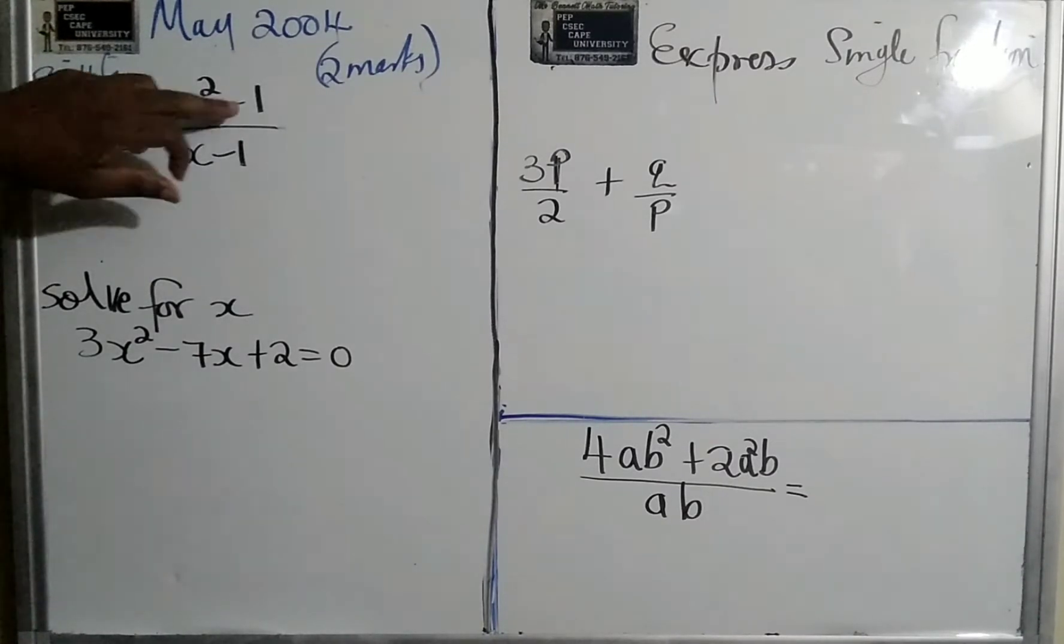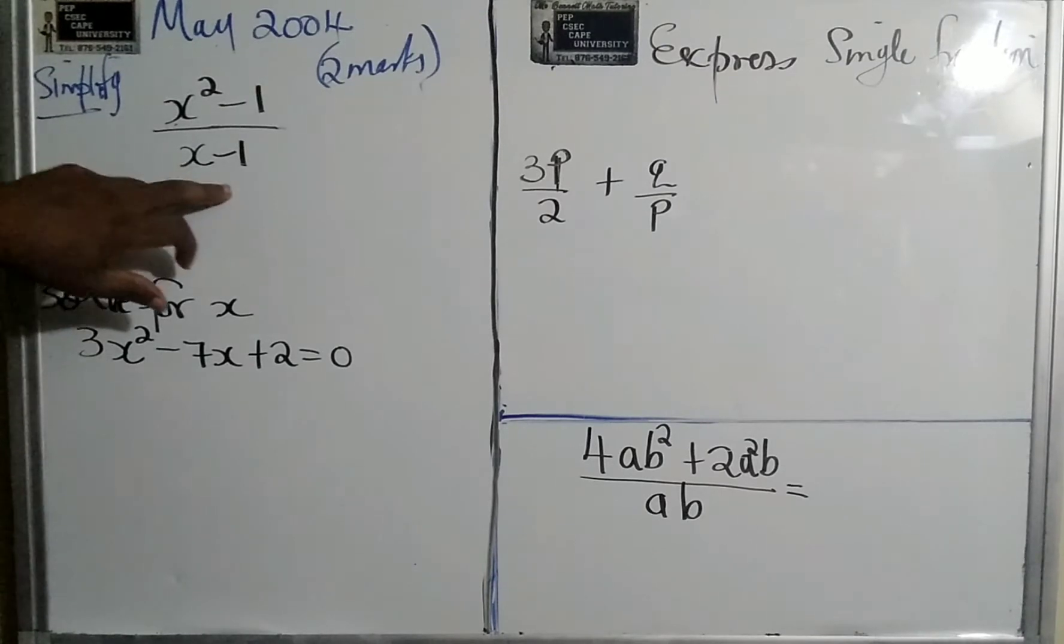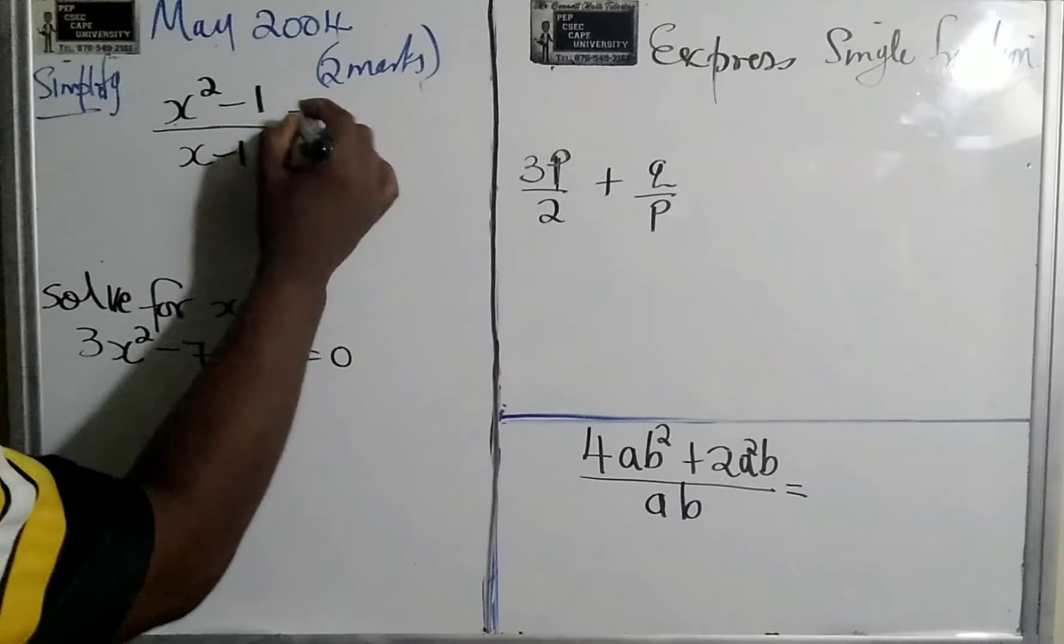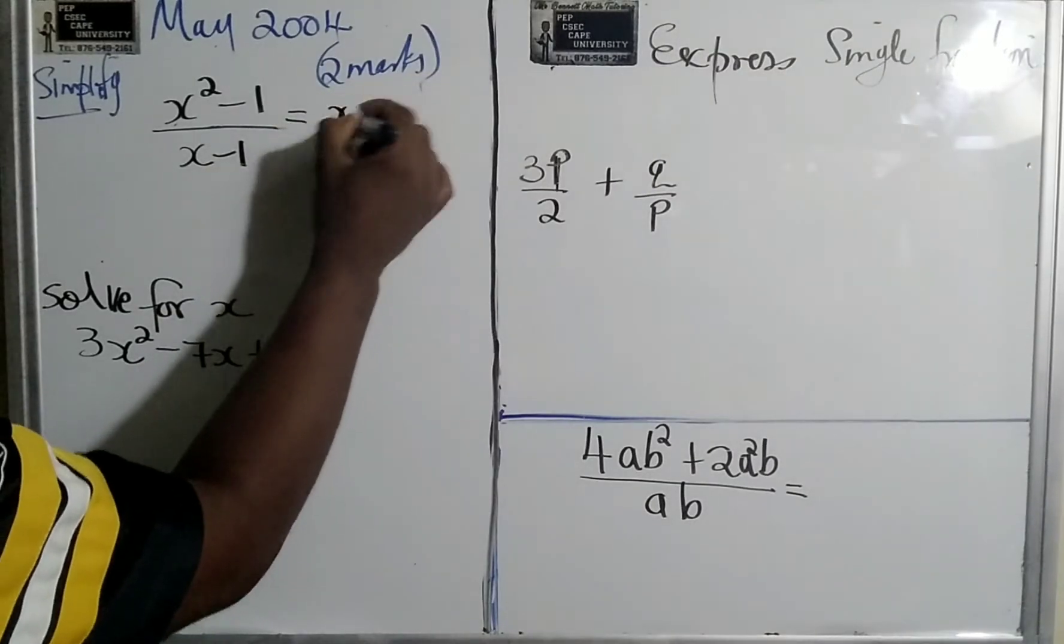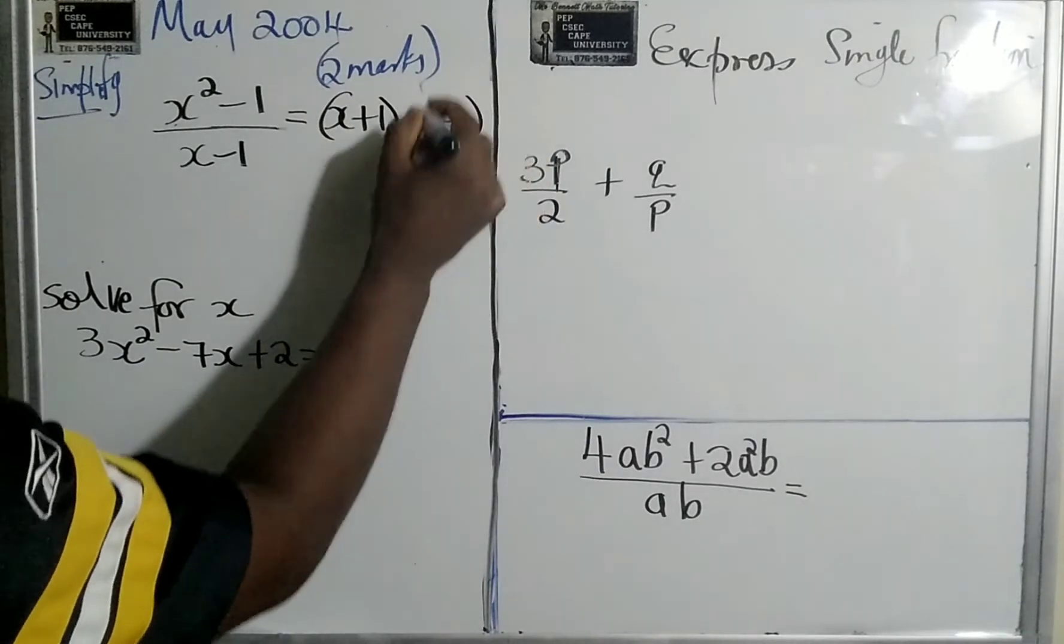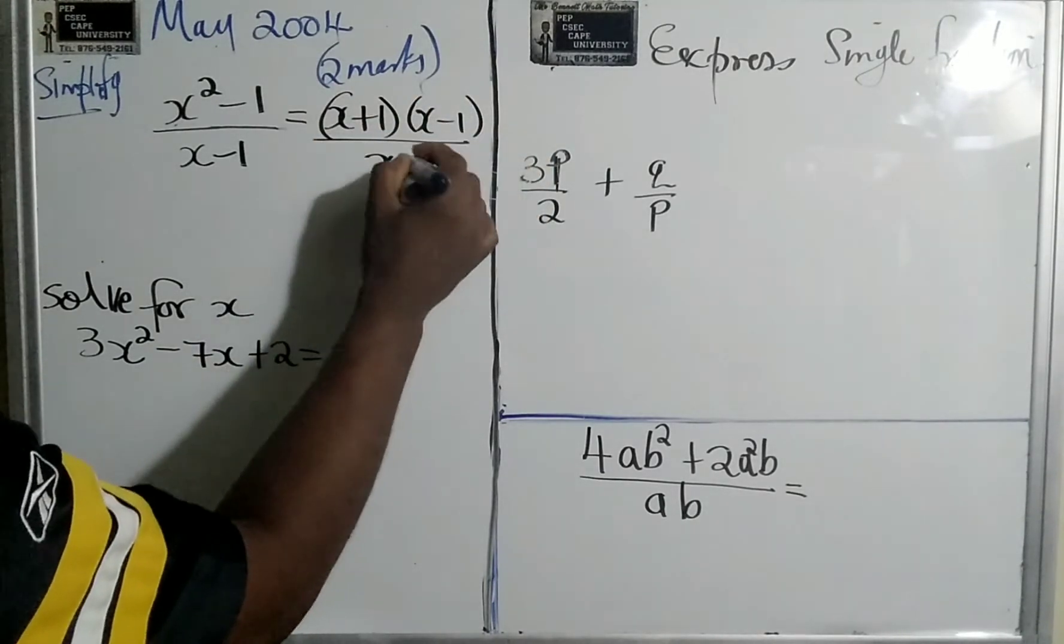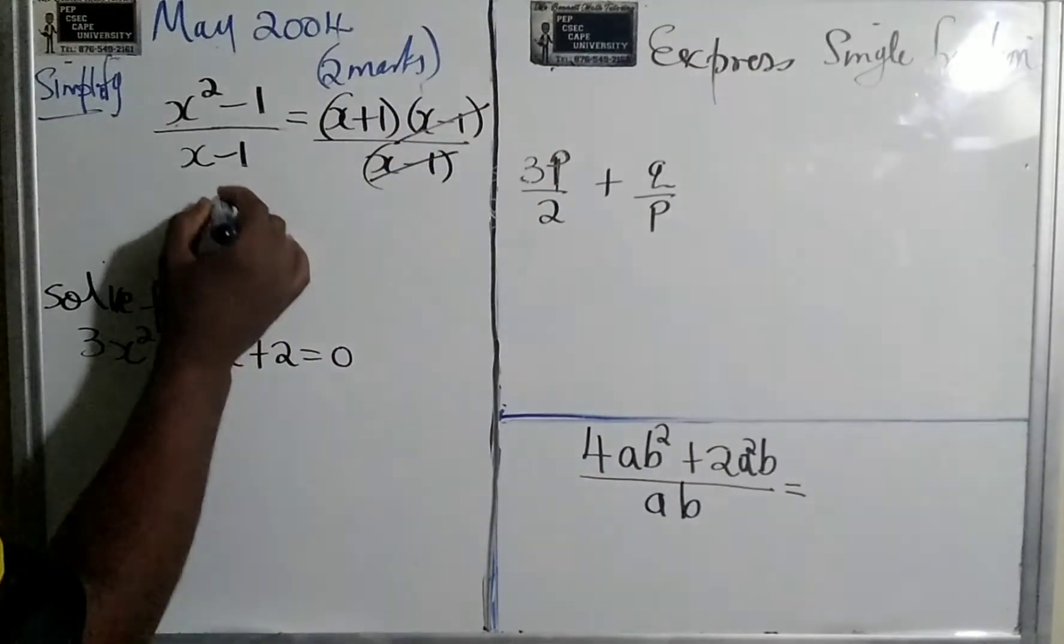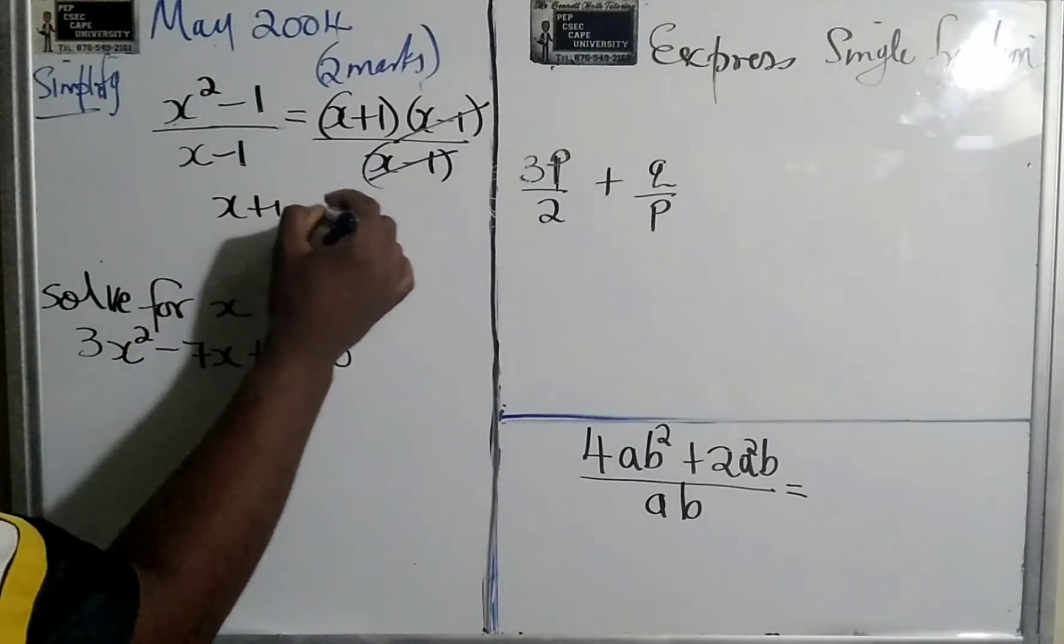We have simplified x squared minus 1 divided by x minus 1. Now, this can be a little bit tricky because you have to know that this is a difference of two squares. So this can be rewritten as x plus 1 and x minus 1 divided by x minus 1. Now we can cancel this, so we are left with x plus 1 as our answer.